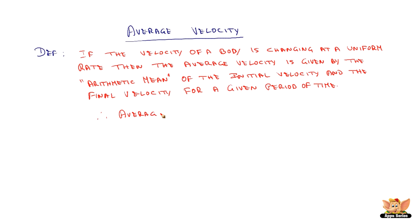Average velocity, represented by v bar, equals initial velocity plus final velocity divided by 2.